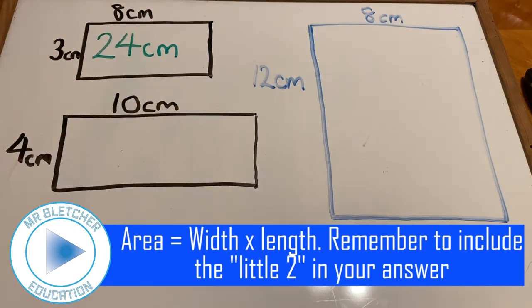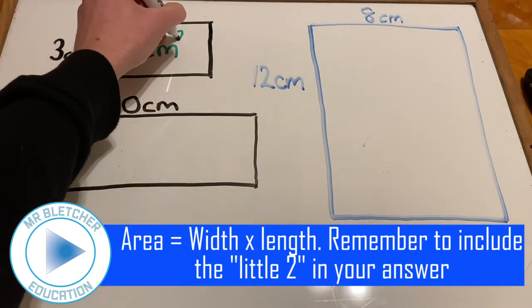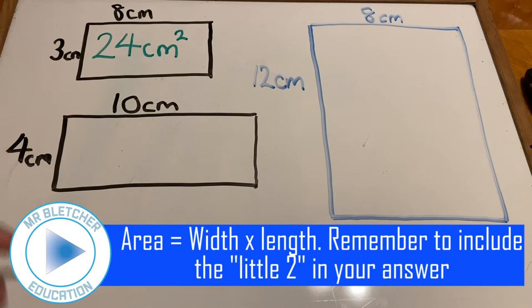However, there's one more step. We need to place a little 2 to show 24cm squared.